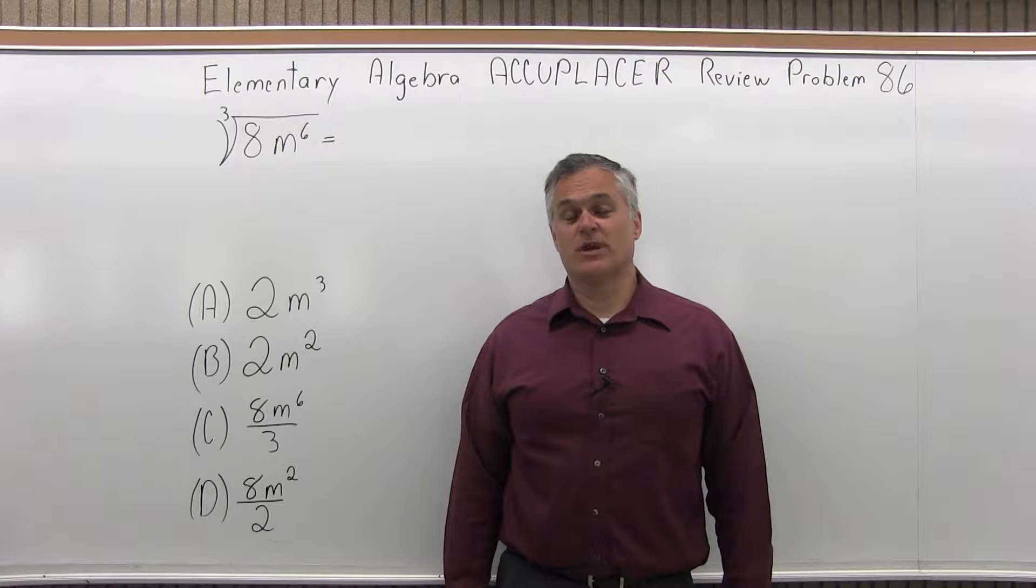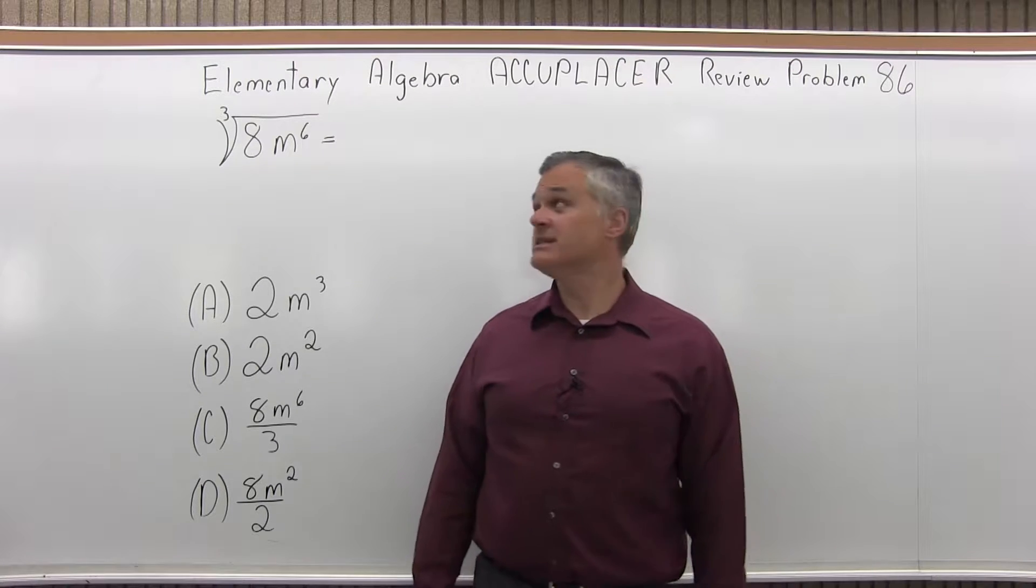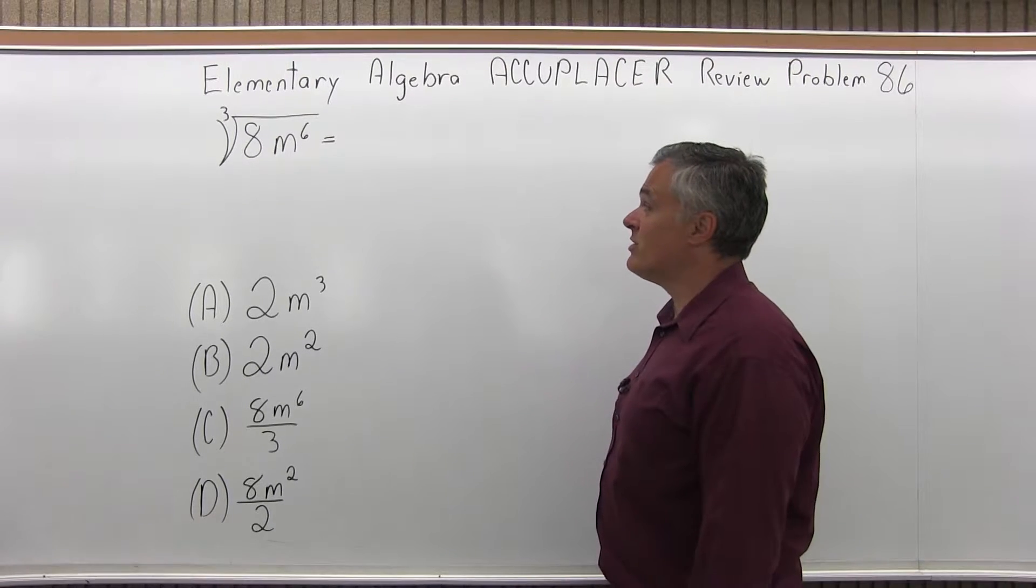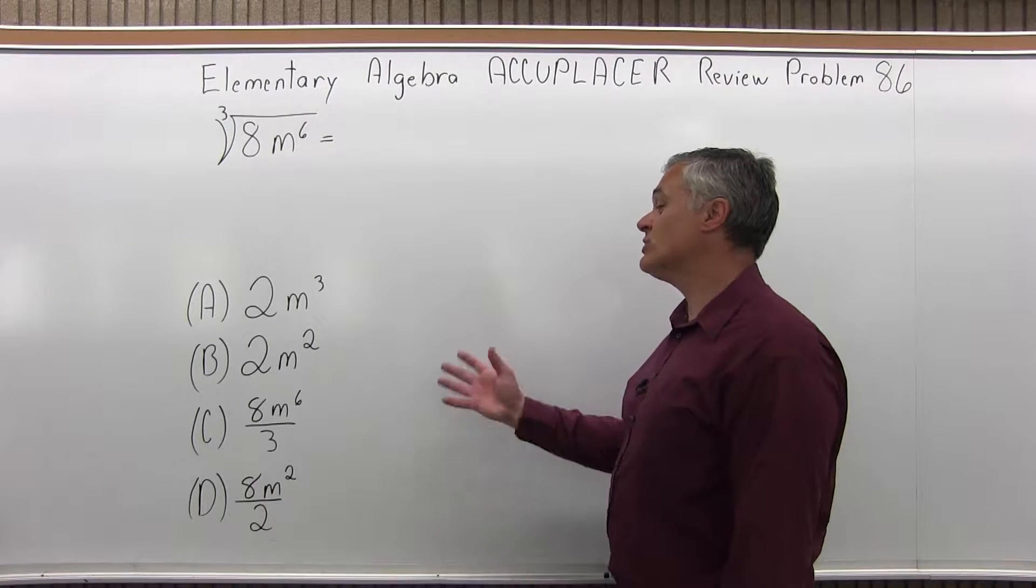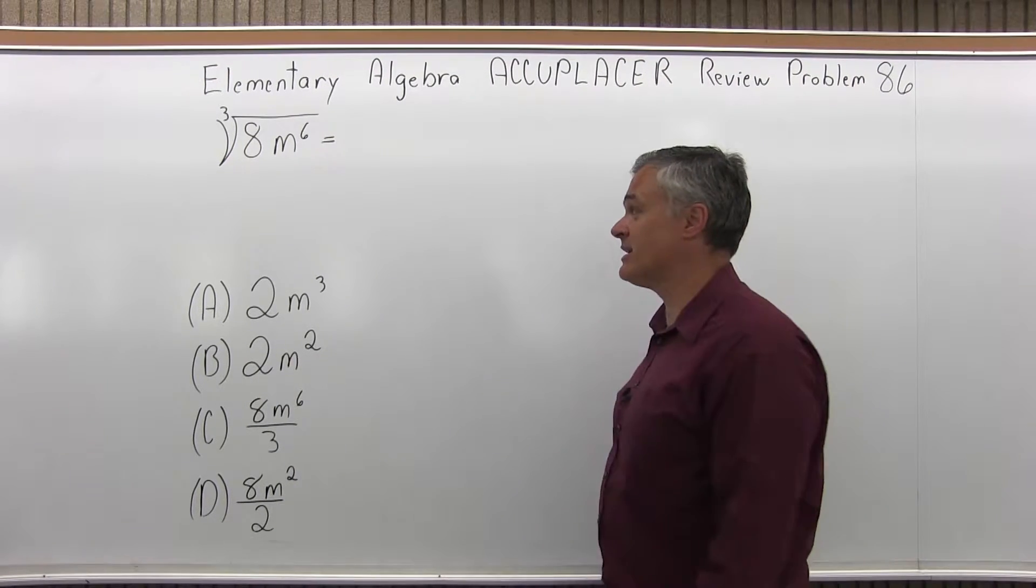This is the Elementary Algebra Accuplacer Review, Problem 86. We have the cube root of 8m to the 6th power equals which one of the following four options that they give you?